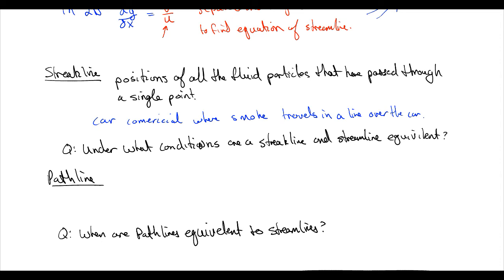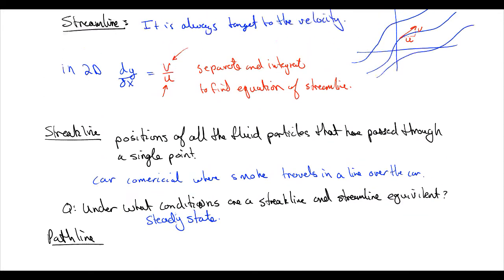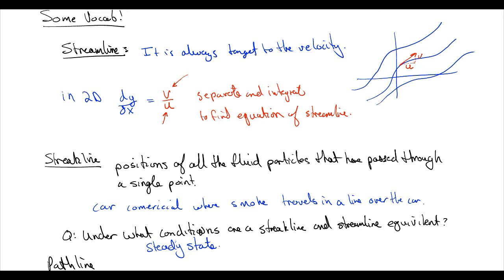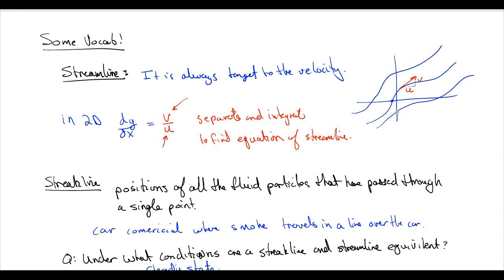Under what conditions are streaklines and streamlines equivalent? They're equivalent during steady state conditions. If streamlines are not changing with time, then they will always pass through the same point, and all smoke particles released at that point will follow that streamline. However, if streamlines are changing with time, the particles will follow one streamline initially but then the streamline changes, and you get something that looks completely different.